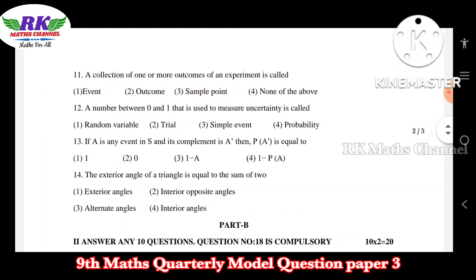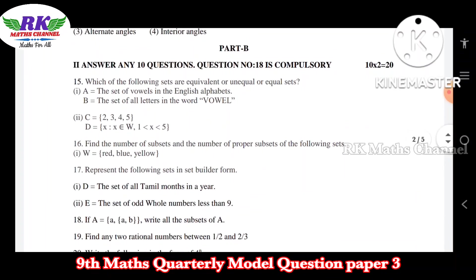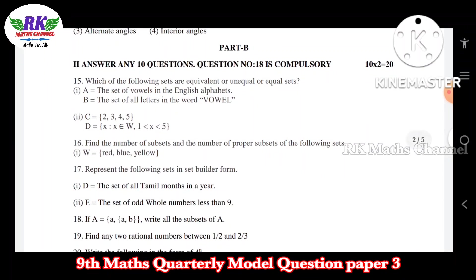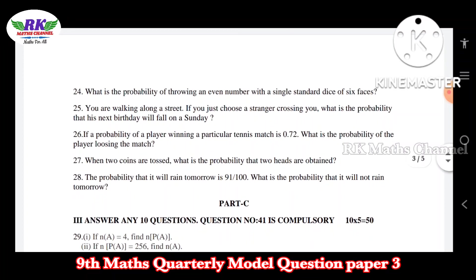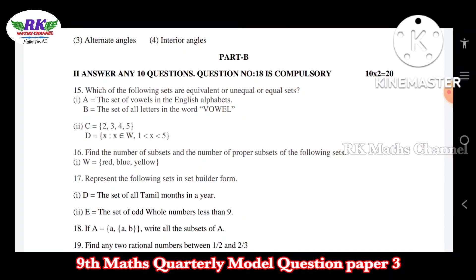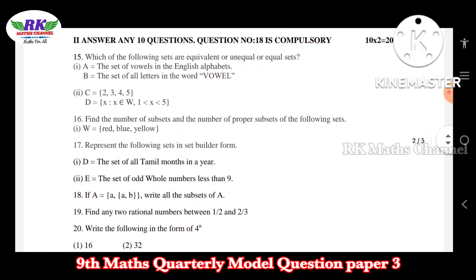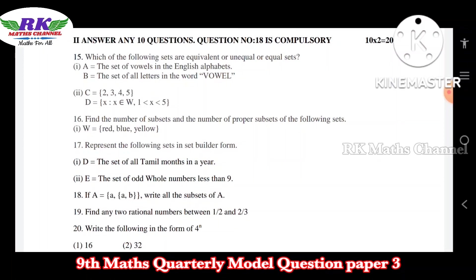Okay, so that's the first four units. In Part B, answer any 10 questions. Question number 18 is a print mistake — it should be question number 28. So 10 questions for 20 marks. The first question: which of the following sets are equivalent, unequal, or equal sets? You can see equal and equivalent sets.